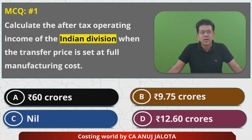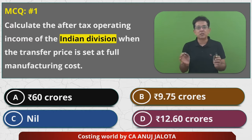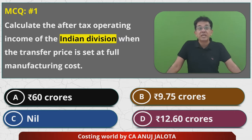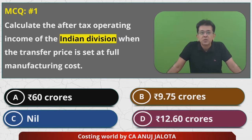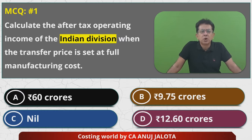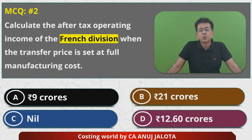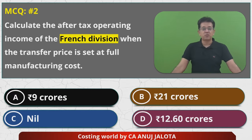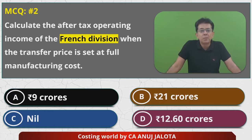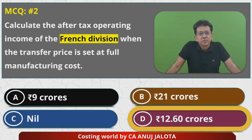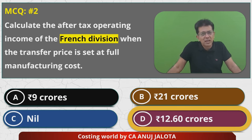Coming back to MCQ 1 and MCQ 2: MCQ number one asks for the after-tax operating income of the Indian division — that was nil, so the answer is C. MCQ number two asks for the profit of the French division — that was ₹1,260 lakhs, which is ₹12.6 crores, so the answer is D.